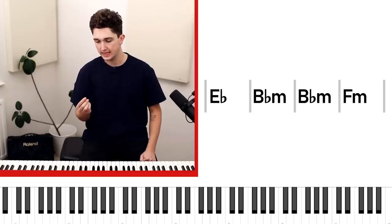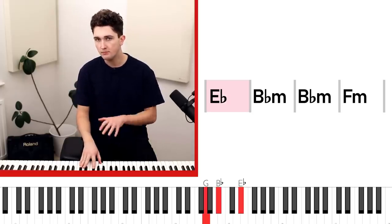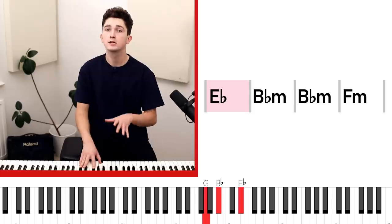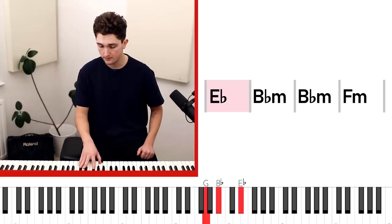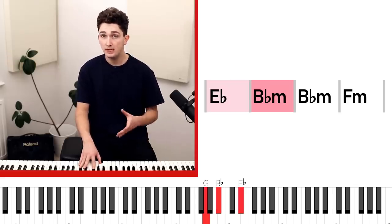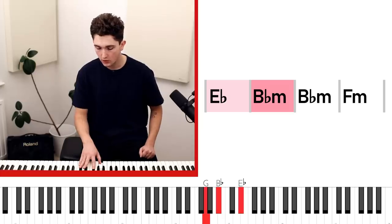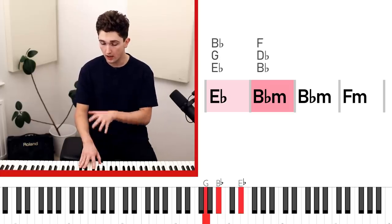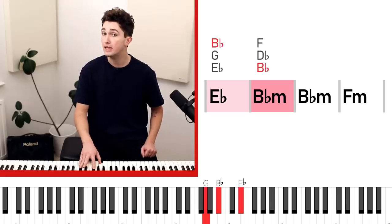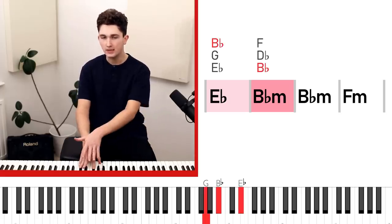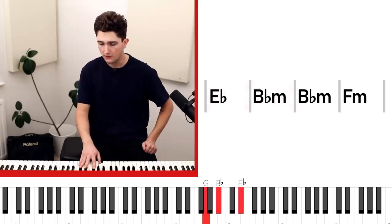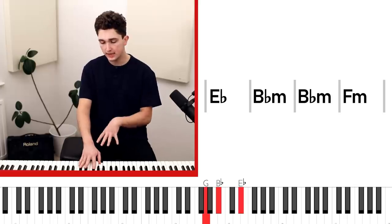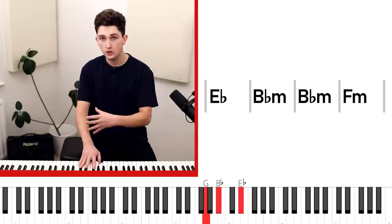Now the key thing to bear in mind with voice leading is what notes are in my current chords that are also in the next chord in the progression. So Clocks starts with this E-flat major chord. The next chord in the progression is B-flat minor. Now that chord has one note in common with our present chord of E-flat, and that note is the B-flat. So that's what we're going to base our inversion around. We're going to sort of pivot our hand around that as we voice lead, because we're going to keep that exactly where it is.